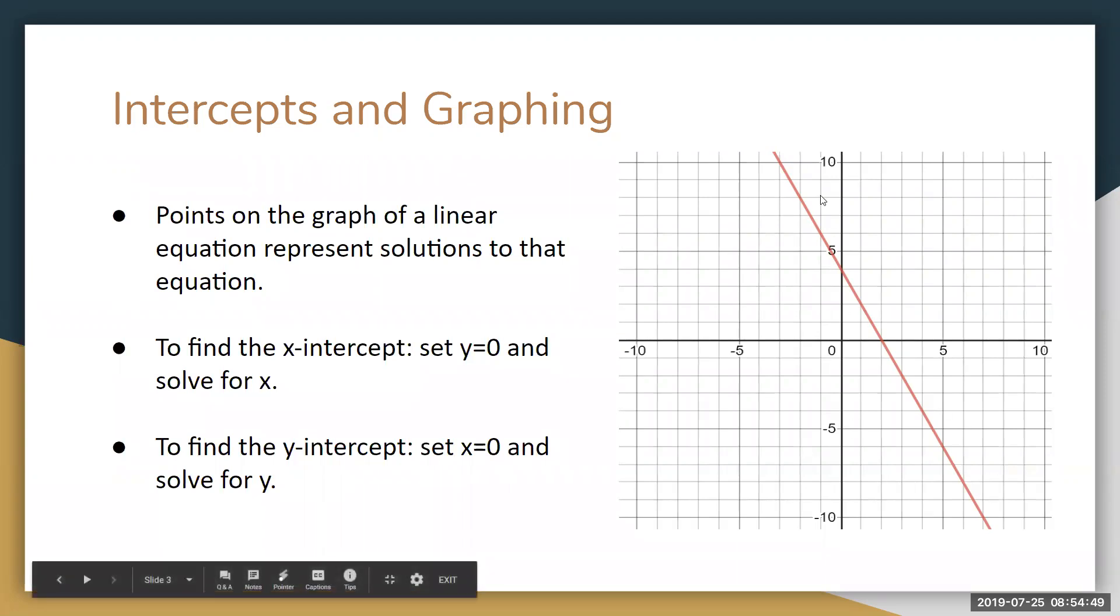Similarly, if you're on the y-axis, that means your x-coordinate is 0. So if you want to find your y-intercept, you can set x equal to 0, and then solve for y. So we'll be looking at some examples of finding x and y-intercepts.